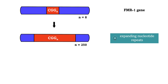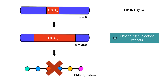This increased number of cytosine-guanine-guanine copies turns off the transcription of the FMR1 gene, which stops the synthesis of the protein product of the gene, FMRP protein. This leads to mental deficiencies.